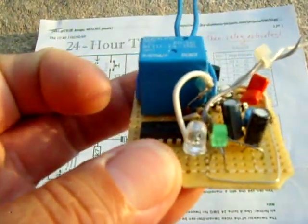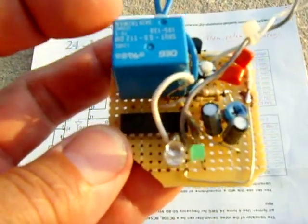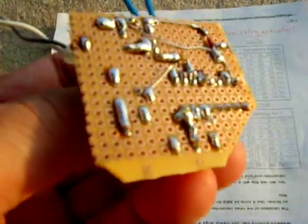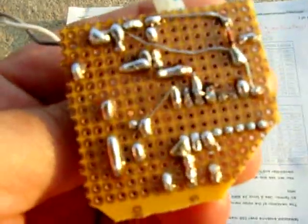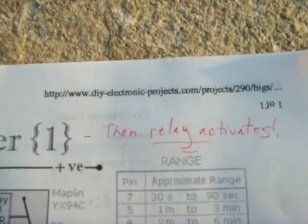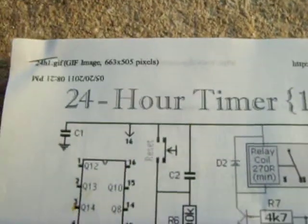Right now, the way it's set up, it's a one-time shot. It'll turn on whatever you want at the time frame that you want. Pretty handy circuit to have, pretty easy to assemble, and you can get this online right here at DIYprojects.com. Just type 24-hour timer.